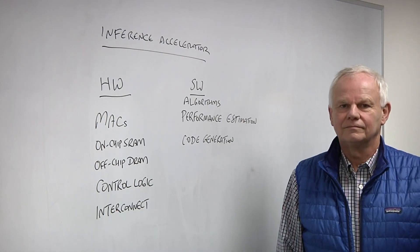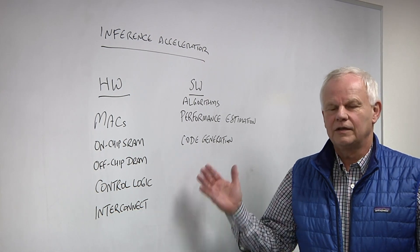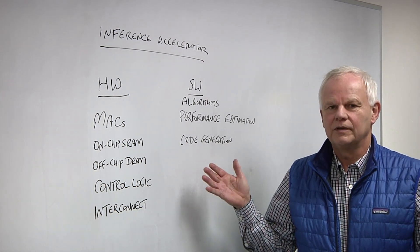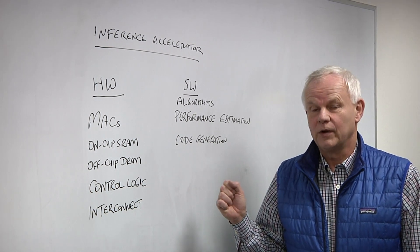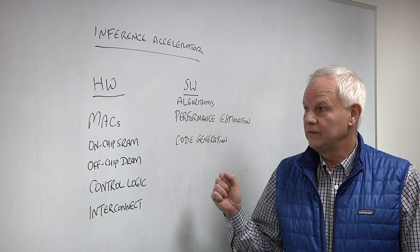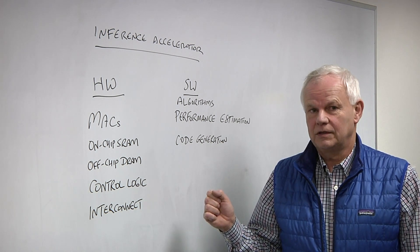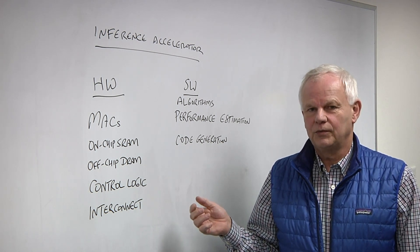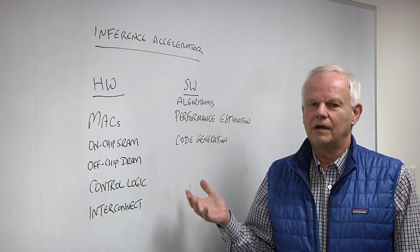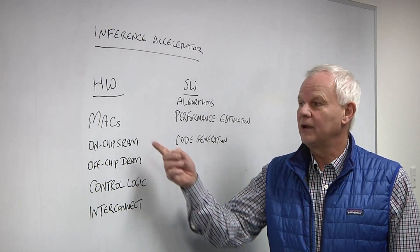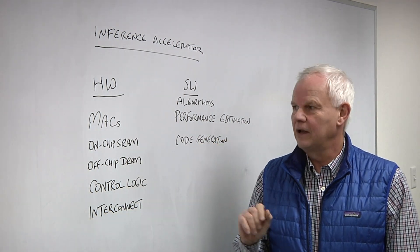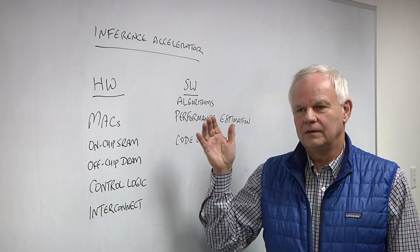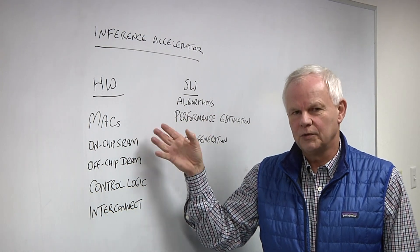What we're looking at here is the key elements that every inference accelerator has to have. If you're going to run inference, for example, YOLO V3, a two megapixel image, it takes around 300 billion multiply accumulates in order to process a single two megapixel image. So you have to have a lot of MACs. But there's many ways in how you can group the MACs.